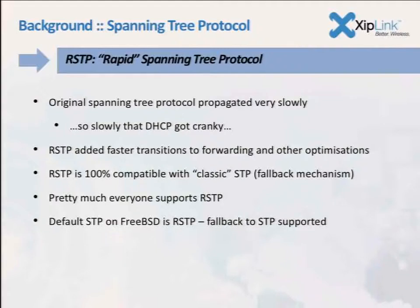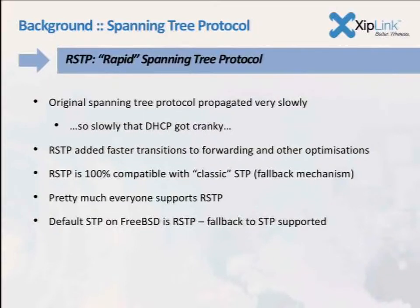Very soon after spanning tree was specified, an upgrade called the Rapid Spanning Tree Protocol was defined. Everywhere you encounter spanning tree today, it's basically RSTP. RSTP is 100% compatible with old STP and can fall back automatically — it'll detect a classic STP bridge and speak spanning tree to it. Pretty much every device supports RSTP. On FreeBSD, the default spanning tree protocol is RSTP, and if an STP device is detected on a link, FreeBSD will speak classic STP on that port.